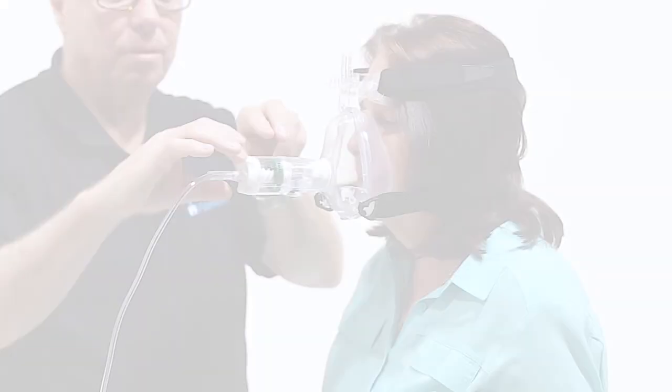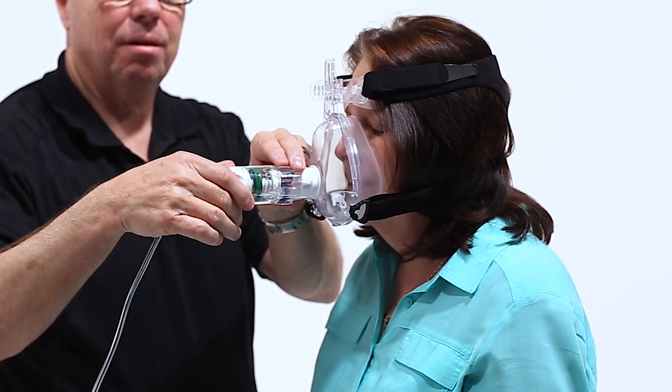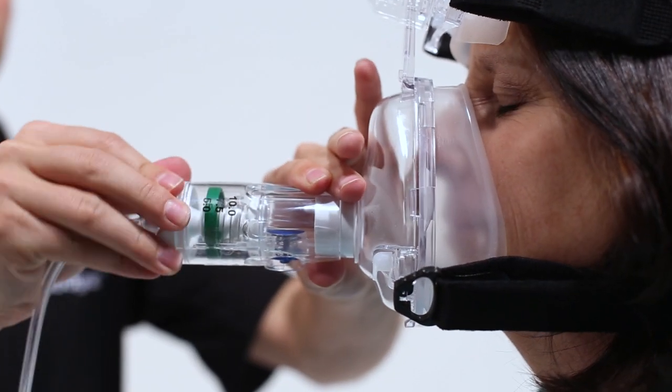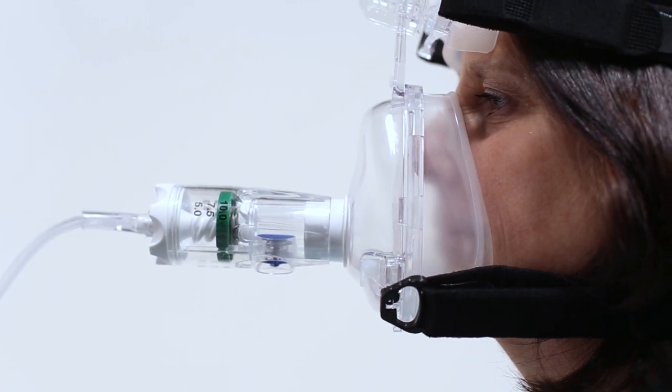Our GO-PAP comes with three PEEP settings. This PEEP as stated prior is independent of the flow in the tank. 5, 7.5, and 10 centimeters of PEEP will run accurately with 10 liters per minute of flow.